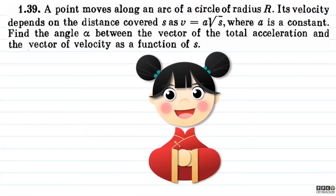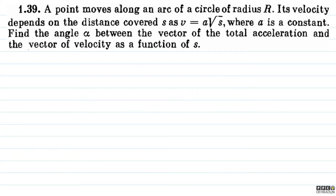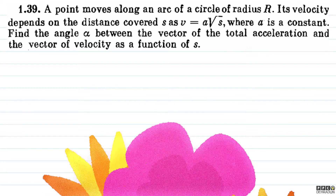Welcome students. Let's have a look at this beautiful question from Irodov. The question says: a point moves along an arc of a circle of radius R. Its velocity depends on the distance covered s as v = a√s, where a is a constant. Find the angle alpha between the vector of the total acceleration and the vector of velocity as a function of s.